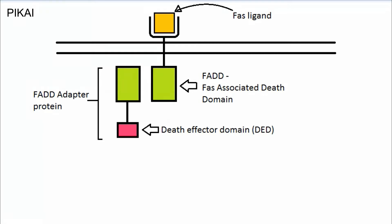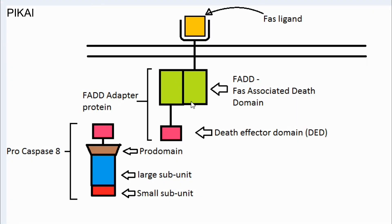The FADD adapter protein contains two subunits: one is the death effector domain (DED), and another is the same subunit present on the internal domain. These two matching subunits are on different molecules. The internal domain and the FADD adapter protein combine and form a dimer because they share the same subunits.